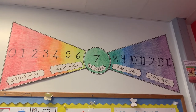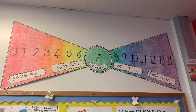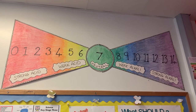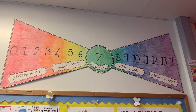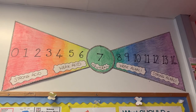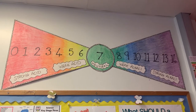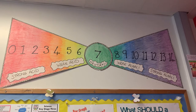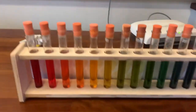Here's the poster in my classroom of the pH scale, showing the colors that universal indicator goes at different pH values. Depending on whether it's a strong acid, a weak acid, a neutral solution, a weak alkali, or a strong alkali, when we add universal indicator to it, it goes a different color.